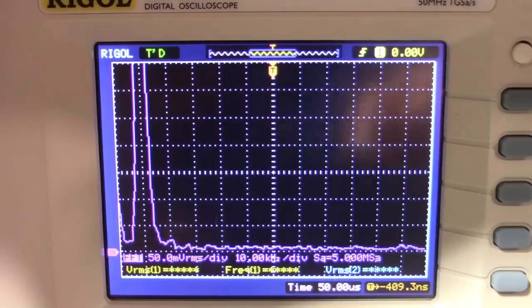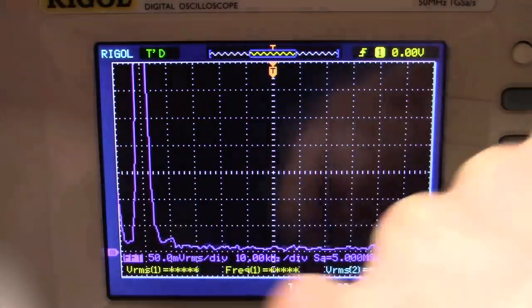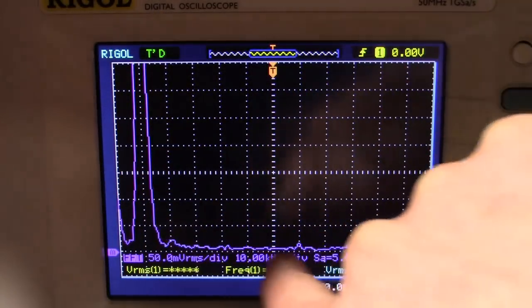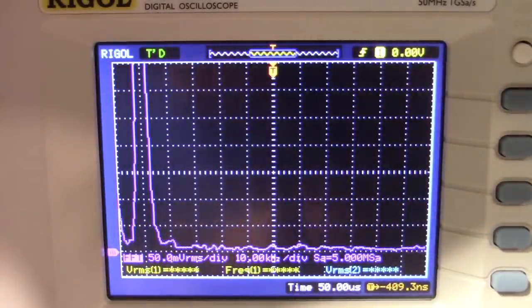Okay, this is distortion at 10 kilohertz. And, it's pretty much noise floor. Maybe a little blip here. Sometimes, it could be generated from the oscilloscope. But, it's a pretty clean amplifier so far.